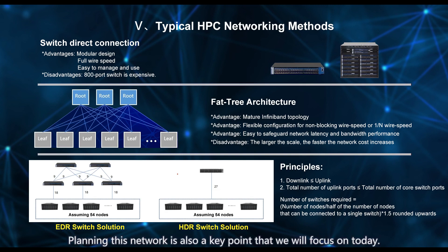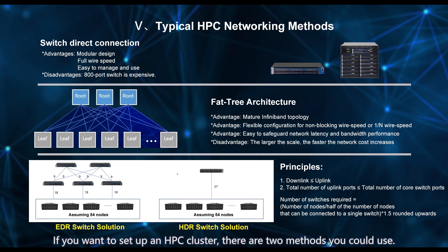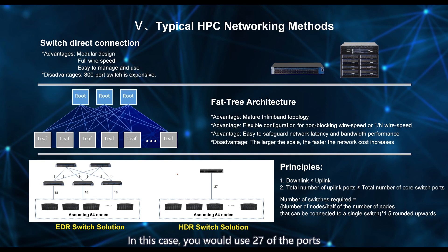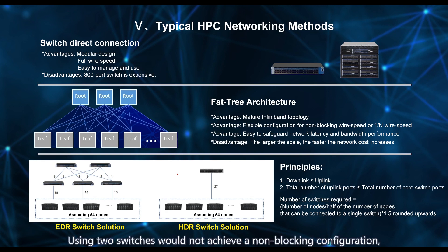Let's consider an example where you have 54 servers, each equipped with a 100G InfiniBand network card, and you want to set up an HPC cluster. If you opt for the HDR solution, the smallest switch has 40 ports, and each port can connect to two server network cards. In this case, you would use 27 of the ports with a 1-to-2 splitter cable to connect to all 54 server nodes. If you choose EDR switches, the smallest one has 36 ports, so one switch wouldn't be sufficient. Using two switches would not achieve a non-blocking configuration, so you would need to adopt a fat tree architecture.